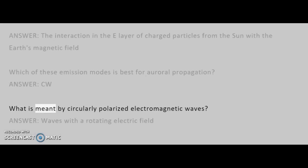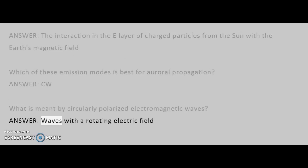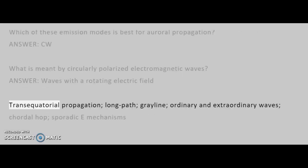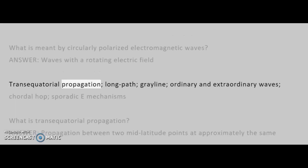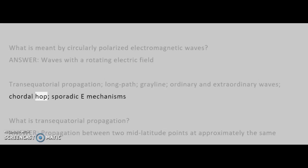What is meant by circularly polarized electromagnetic waves? Answer: waves with a rotating electric field. Topics in the next group include: Trans-equatorial propagation, long path, gray line, ordinary and extraordinary waves, chordal hop, and sporadic-E mechanisms.